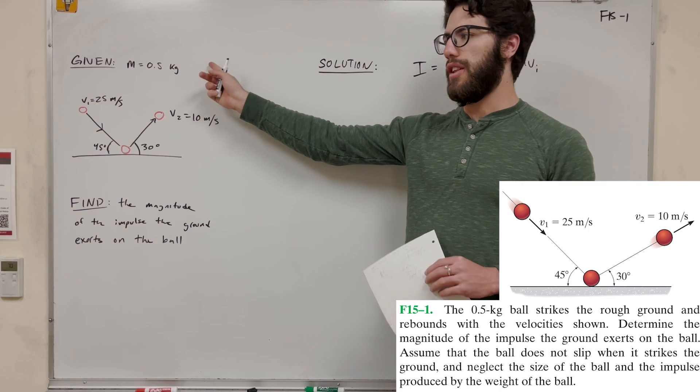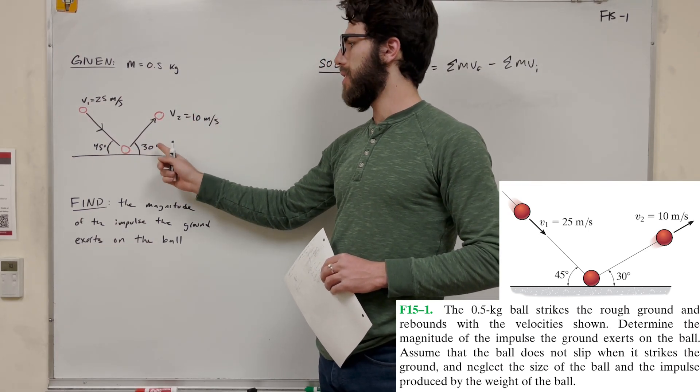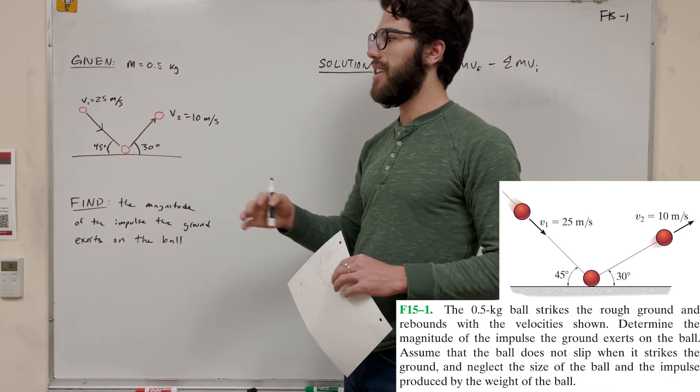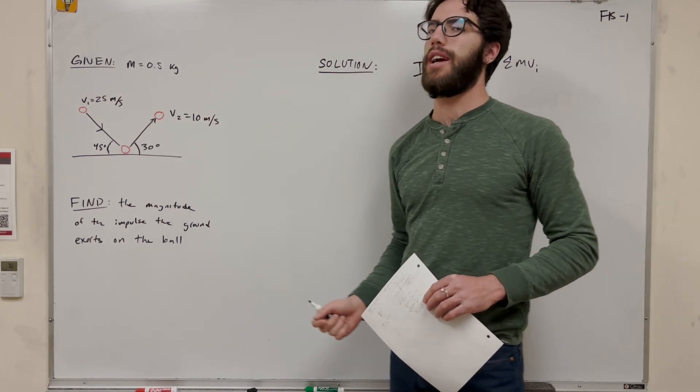We're given a ball mass 0.5 kilograms and it comes in and hits the ground at this angle and then it comes back up at this angle at a different speed. Our goal is to find the magnitude of the impulse the ground exerts on the ball when it hits the ground and bounces back up.